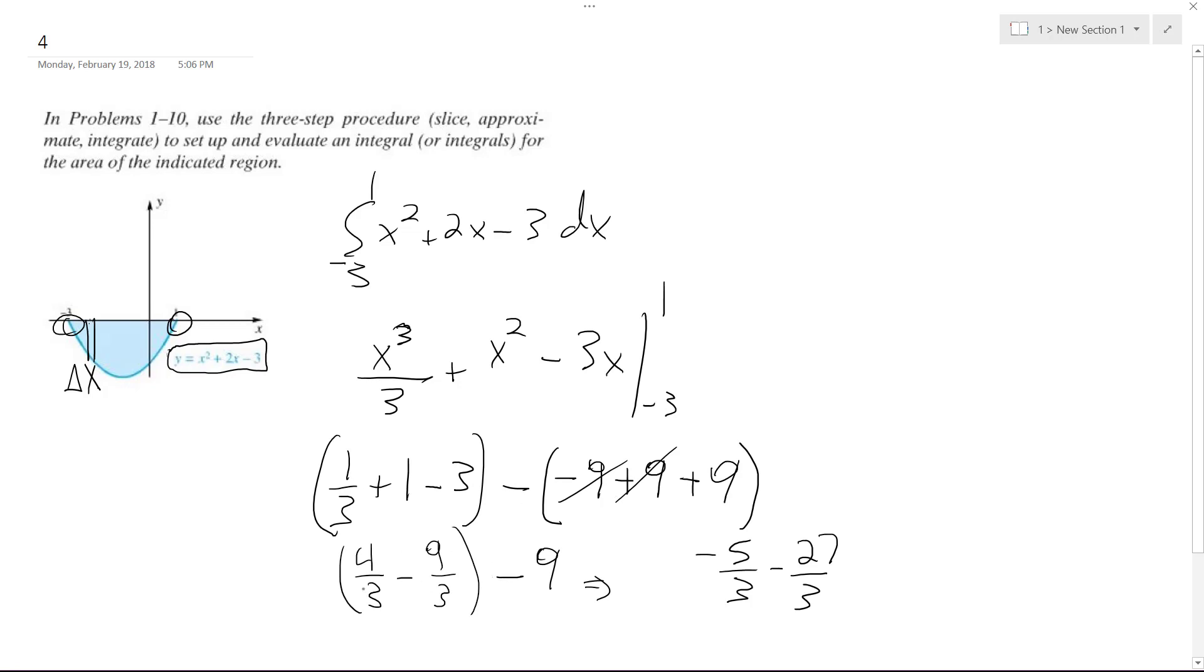So finishing this up, I get, I bring this down, I get 4 over 3 minus 9 over 3, minus 9, and then I move it over here, I get negative 5 over 3 minus 27 over 3, which gets me negative 32 over 3, or excuse me, 32 over 3.